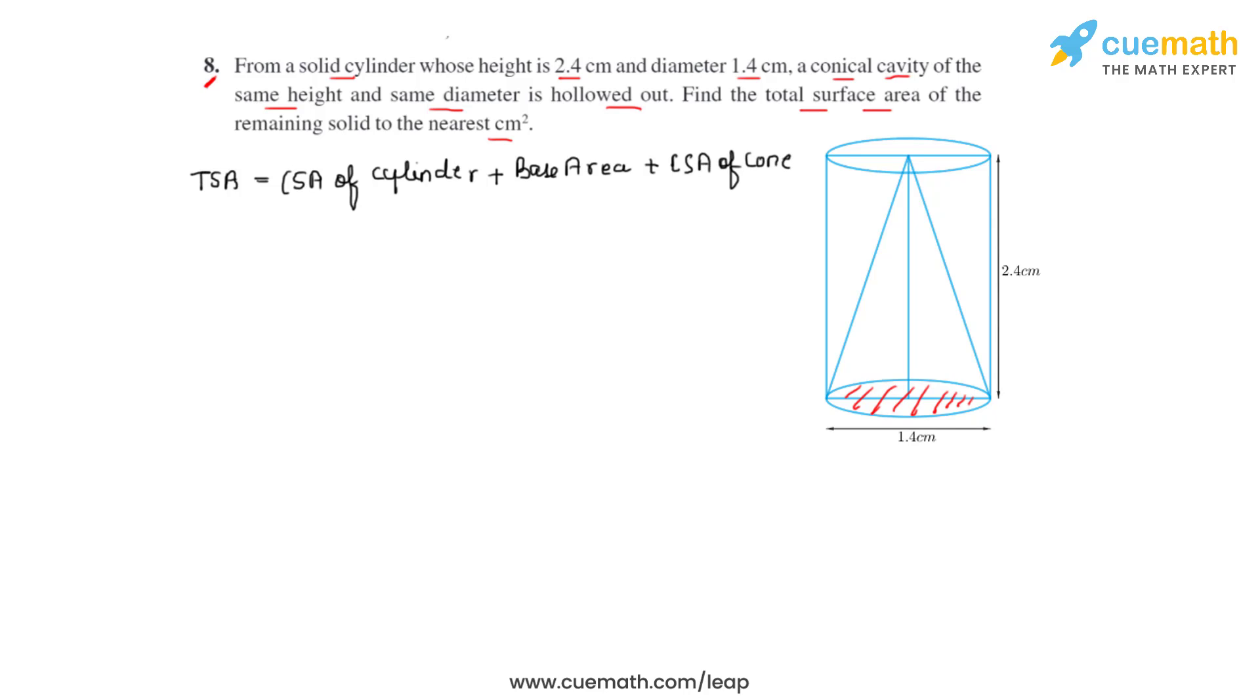Now we will substitute the formulas. The curved surface area of a cylinder is calculated by making use of the formula 2πrh, plus base area. The base is a circle and a circle's area is found out by making use of the formula πr², plus the curved surface area of a cone which is found by making use of the formula πrl.